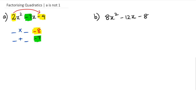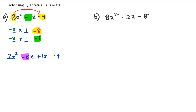So our two numbers are going to be negative 8 and positive 1. Once we've done this we're going to split that negative 7x using negative 8 and positive 1. So we're going to write down 2x squared, but instead of writing it as minus 7x we're going to write it as minus 8x plus 1x, and then we've got minus 4 at the end. So what we've really done is replaced that negative 7x with negative 8 and positive 1.